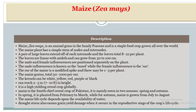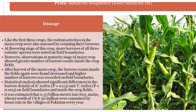Vertebrate pests of maize include Bandicota bengalensis (lesser bandicoot) and other rodents. Rodent activity in the maize crop was assessed by counting their burrows at the flowering stage of the crop. More burrows of three rodent species were noticed on field boundaries. However, observation at the maturity stage of maize showed a greater number of burrow counts inside the crop field. After harvest, burrow counts inside the field decreased and higher numbers were recorded on field boundaries. Statistical analysis showed significant differences in burrow density inside the field boundaries (p = 0.03) and inside the crop field (p = 0.003).